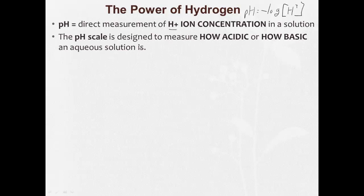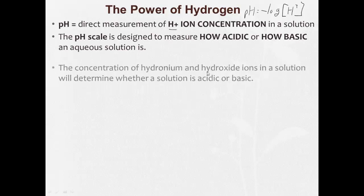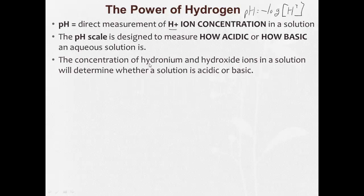The pH scale is designed to measure how acidic or how basic an aqueous solution is. And the concentration of hydronium, H3O-plus, or hydrogen, H-plus—hydronium, we'll use for both of these sometimes—and the concentration of hydronium and hydroxide ions in a solution will determine whether it is acidic or basic.